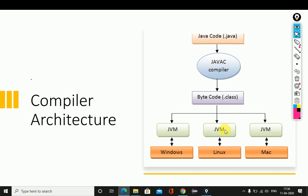Similarly, on the Mac operating system, JVM handles execution. Overall, we can say Java is a platform independent language — the Java class file can execute on any platform with the help of JVM. However, we cannot directly compile a Java source file from one operating system using the JVM of a different operating system.